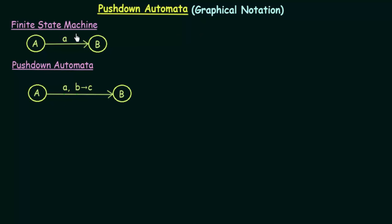When we studied finite state machines in our previous lectures, we used transition diagrams to represent them — circles representing states and arrows representing transitions from one state to another on getting particular input symbols. We shall see how this can be done for pushdown automata using similar diagrams, where arrows represent transitions on particular conditions.